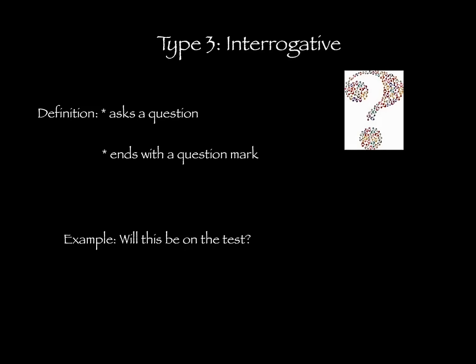By the way, do you know what an interrogative sentence is? As a matter of fact, Mr. Geiselman, I can tell you what an interrogative sentence is right now. That is our third type of sentence. The definition of an interrogative sentence is something that asks a question and it ends with a question mark. An example of this would be: will this be on the test? Make sure you pause and write down the definition and then come up with your own example sentence of interrogative.